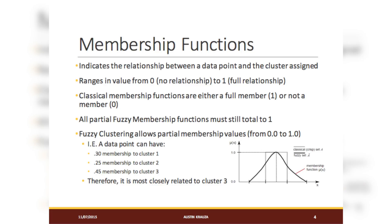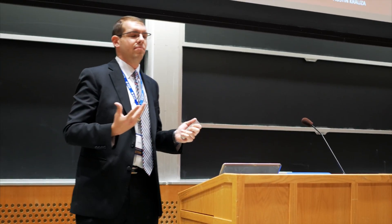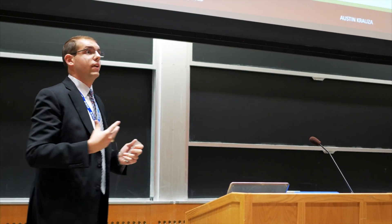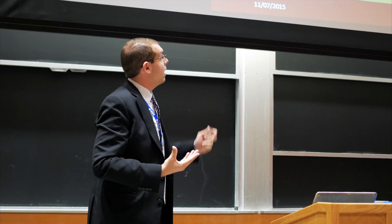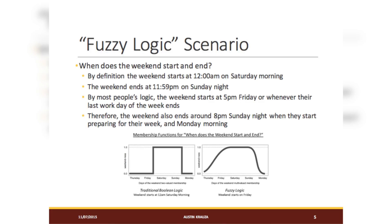A real-world example: when does the weekend start and end? For me, the weekend ends around Thursday when my class lets out. For some people, it might be 5 o'clock on Friday when work ends. In traditional membership, midnight on Saturday officially starts the weekend and it continues until midnight on Sunday/Monday. However, with fuzzy logic, we can see that on Thursday we're starting to get an increase in membership value, we're at peak value Friday and Saturday, and then we're slowly decreasing on the decline until Monday.